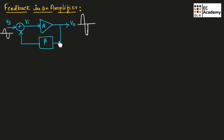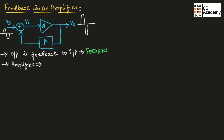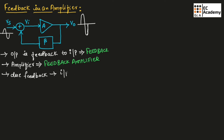When some portion of output is fed back to the input, the process is known as feedback, and the amplifier used for this process is known as a feedback amplifier. Due to feedback, the input will be depending upon the output.